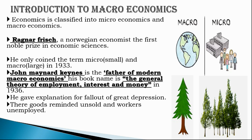When we speak about a single individual it is microeconomics; when we speak about a country or a nation it is macroeconomics. Ragnar Frisch, a Norwegian economist and co-recipient of the first Nobel Prize in Economic Sciences, coined the terms microeconomics and macroeconomics. Micro means small and macro means large — this was in the year 1933.